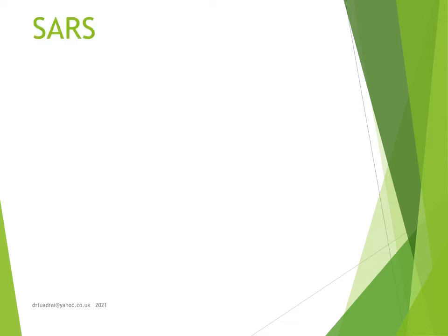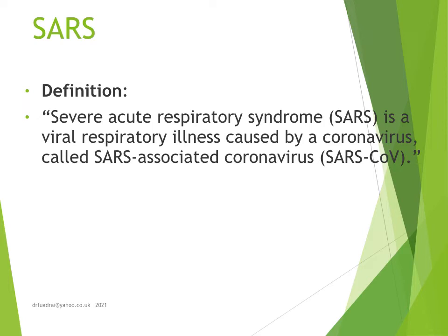Now moving to SARS: SARS stands for severe acute respiratory syndrome. It is a viral respiratory illness caused by a coronavirus called SARS-associated coronavirus. This is one of the precursors of the present COVID-19. The coronavirus has existed around 8000 BC and some have predicted it existed even 50 million years ago, so it is not a new entity.